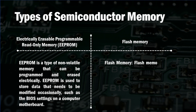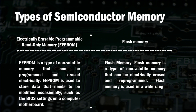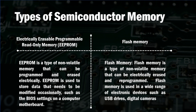The next type is flash memory. Flash memory is a type of non-volatile memory that can be electrically erased and reprogrammed. Flash memory is used in a wide range of electronic devices such as USB drives, digital cameras, and mobile phones.